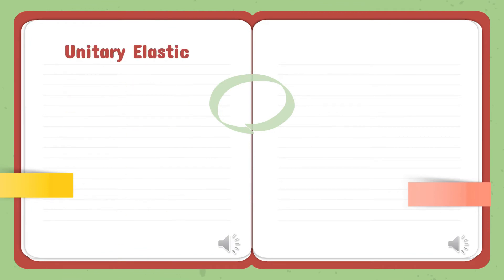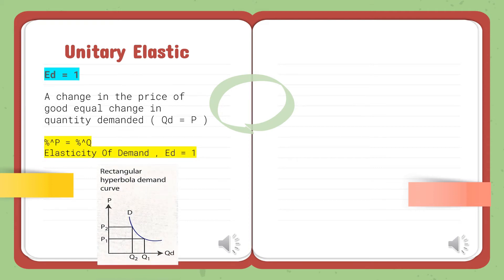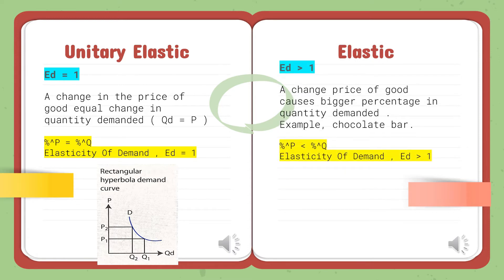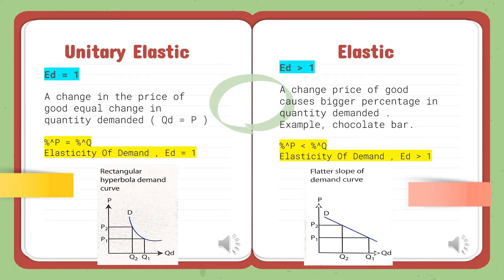For Unitary Elastic demand, a change in the price of a good equals the change in quantity demanded, and the value of elasticity is always equal to one. For Elastic demand, when the price of chocolate increases by 5%, the quantity demanded falls by 10%, so the value of elasticity is greater than one.